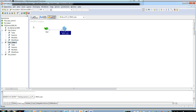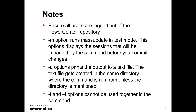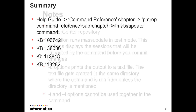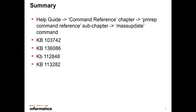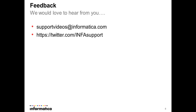That brings us to the end of the demo session. Key reminders: before running the command, ensure all users are logged out of the repository, because if any user has a workflow open the command will fail as it cannot obtain a write lock on that workflow. The minus m option is test mode — no changes are committed but you can see what sessions will be updated. Minus u prints output to a text file, and minus f and minus i are mutually exclusive. Refer to the command reference chapter and the listed KBs for more details on the pmrep mass update command. Thank you.